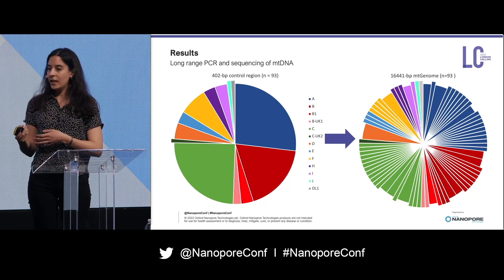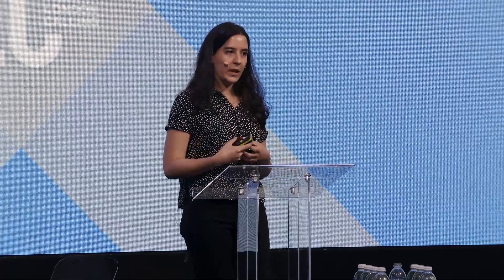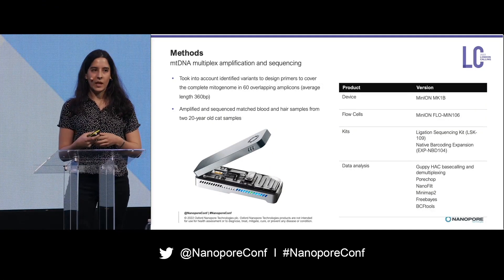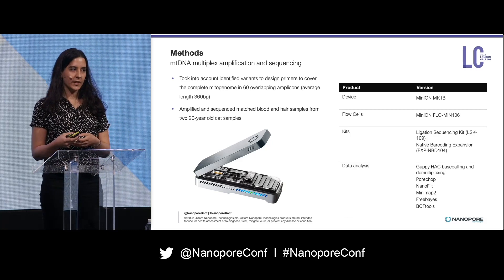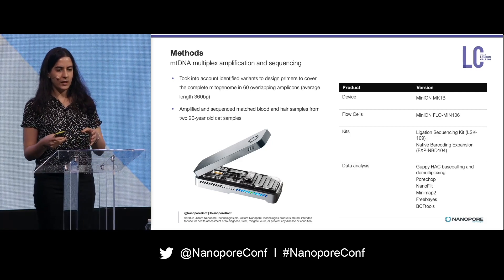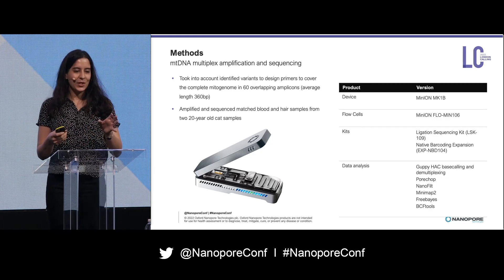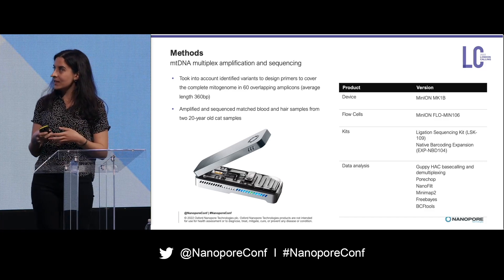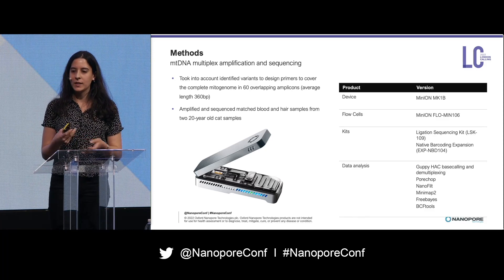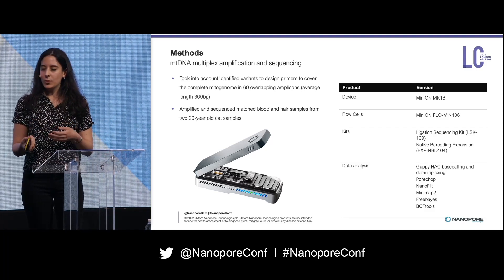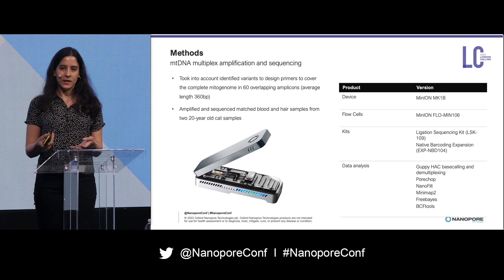We then wanted to apply this approach to cat hairs, which required shorter amplicons. We took into account the identified variants and designed primers to cover the whole mitogenome in 60 overlapping amplicons with an average length of 360 base pairs. This consisted of two multiplexes, each with 30 non-overlapping amplicons. We then amplified and sequenced matched blood and hair samples from two cats where the samples were collected in 2001, and sequenced them on the flow cell, processing the data in much the same way.